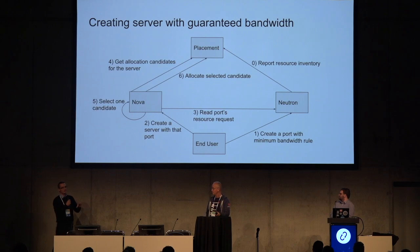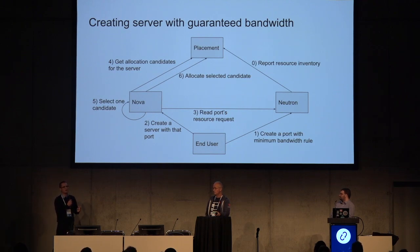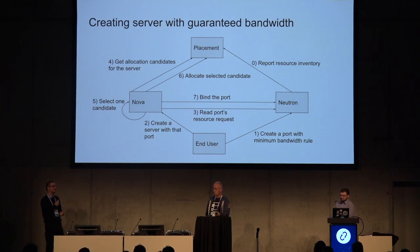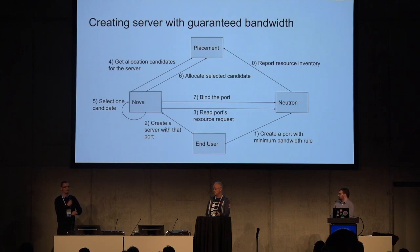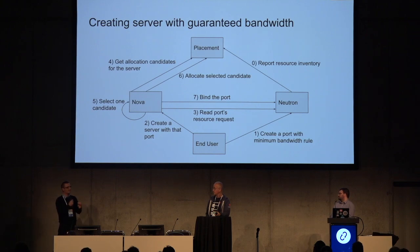Now Nova knows which compute host the server will be booted on and which resource providers supply its needs. Since the resource is coming not just from the flavor but also from the port, Nova needs to tell Neutron what the decision was. Nova previously did port binding to tell Neutron which compute host the port will be bound to, letting Neutron do preparation work on the networking side. But now with this feature, Nova also needs to tell Neutron which resource provider — which physical network device — will provide the bandwidth resource needs of each given port.